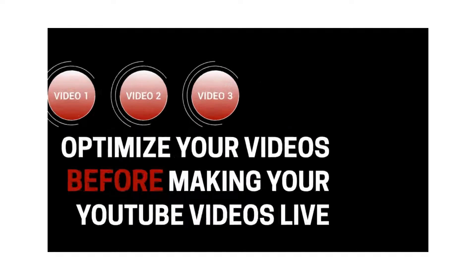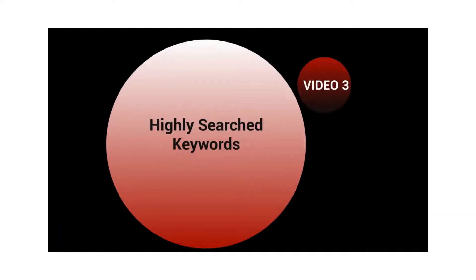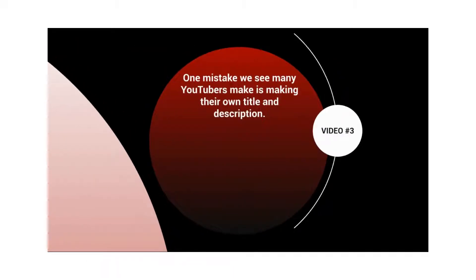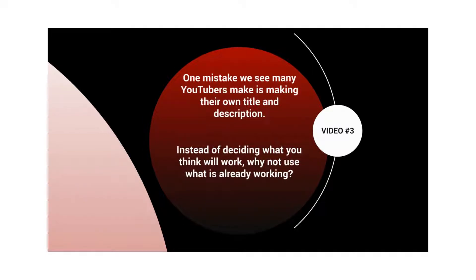Welcome to video number three. Let's talk about highly searched keyword terms and how to figure out what your main keyword and sub-keywords are going to be. One mistake many YouTubers make is simply making up their own title and description. Instead of deciding what you think will work, use what is already working with simple keyword research that won't take a lot of time. This way you'll have the right information to rank on the right keywords.